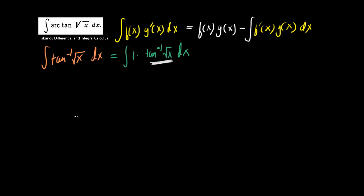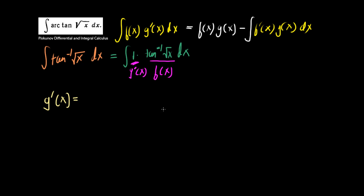I don't think you'd ever choose tangent inverse of the square root of x as g'(x), because that is the very thing we've been asked to integrate. So we choose 1 as our g'(x) and the tangent inverse of the square root of x as our f(x). So g'(x) = 1, which means g(x) = x, and f(x) = arctan(√x).